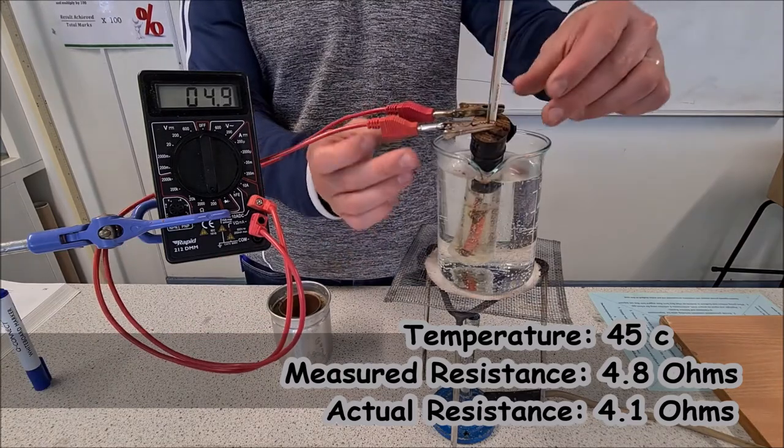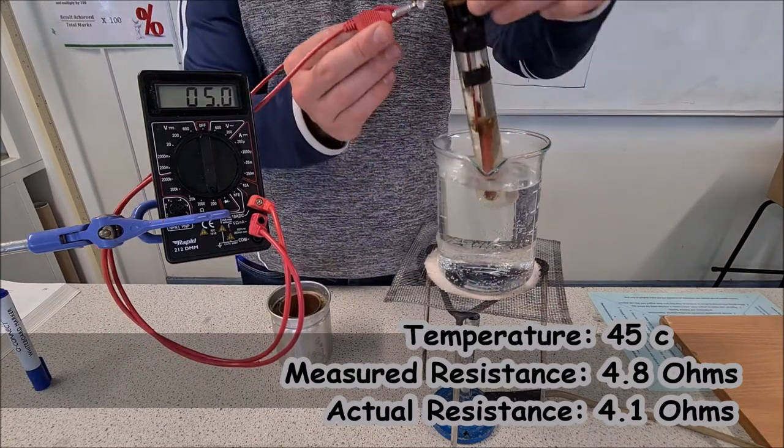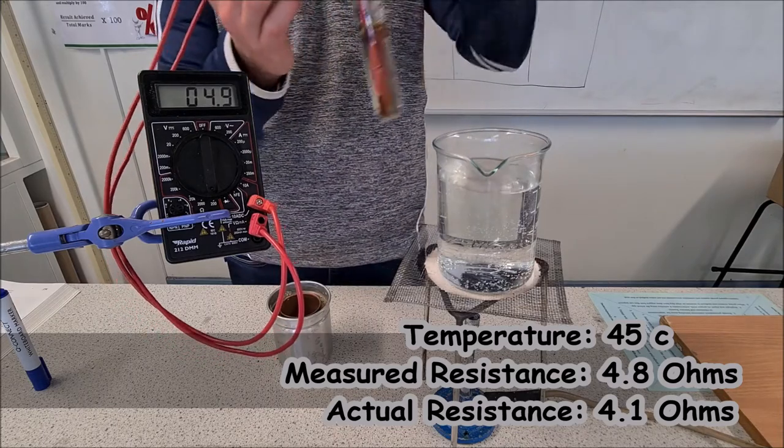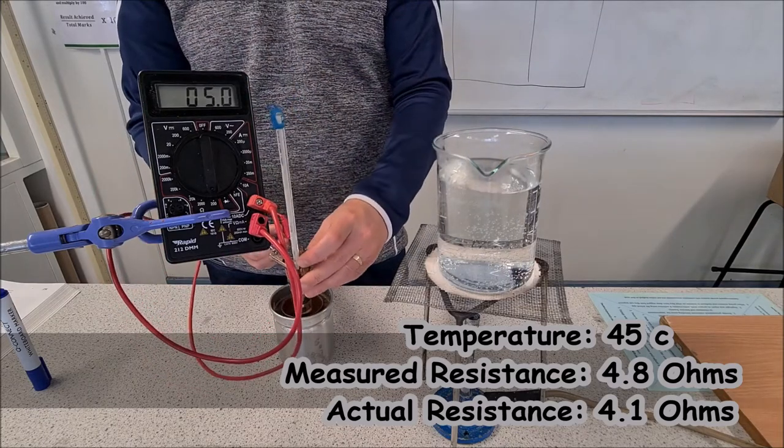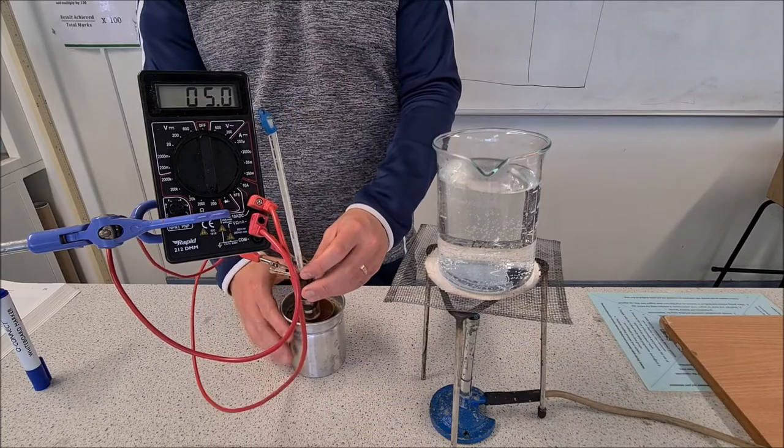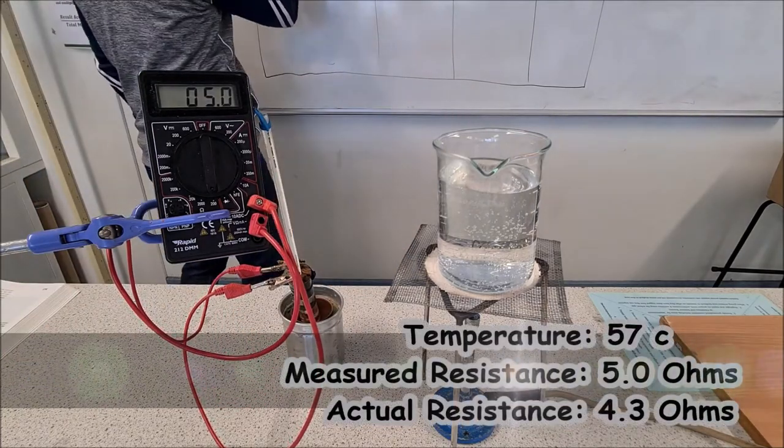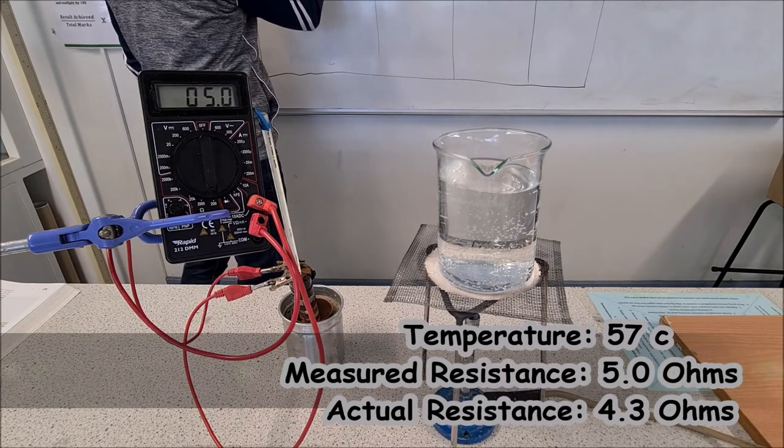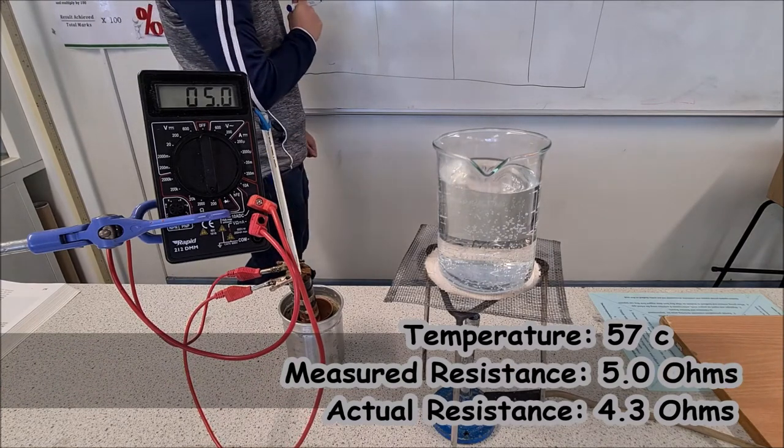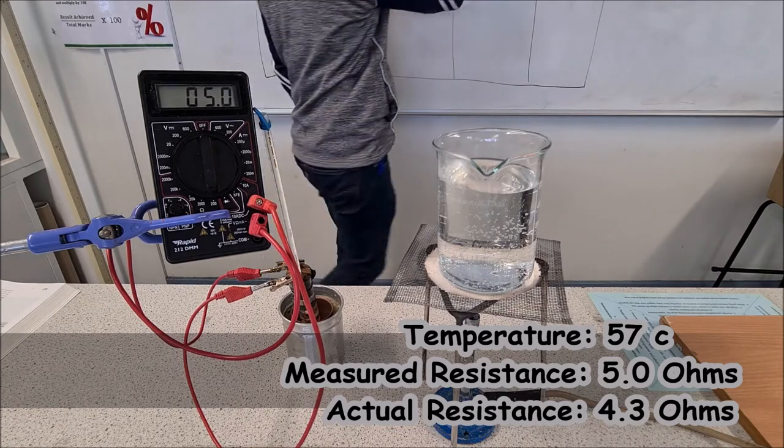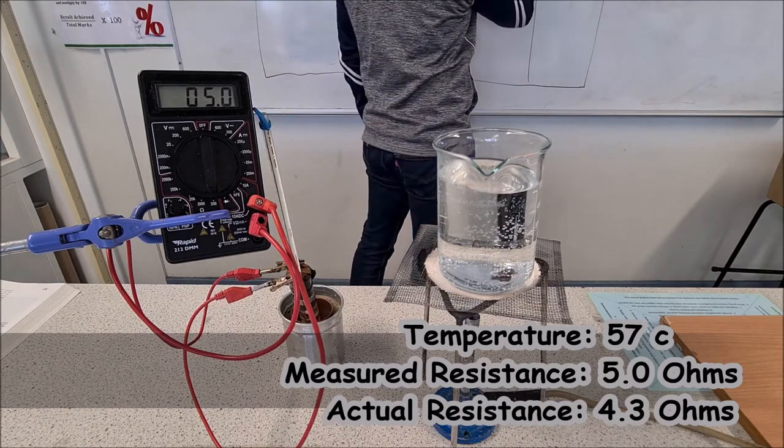The temperature is rising much quicker now. We're coming up on 55 degrees so I'm going to take this out. Give it a moment to settle. 57 degrees and our resistance is 5.0 ohms.